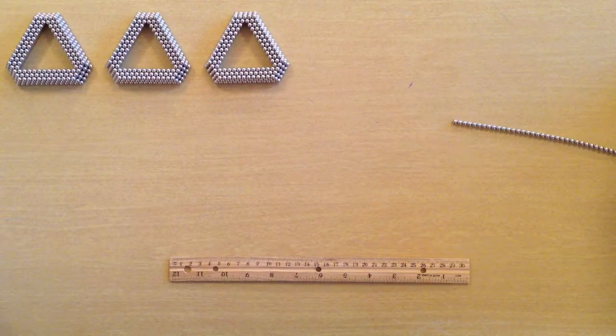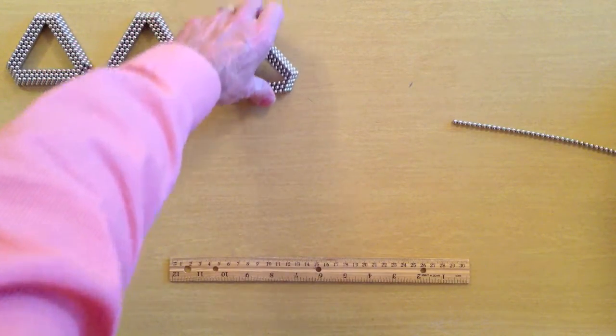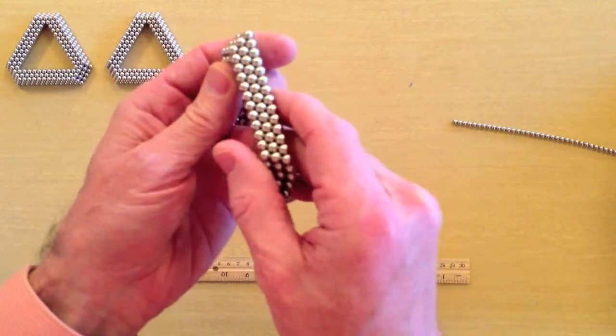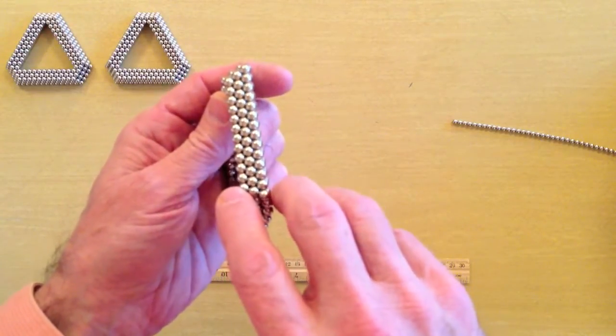The frame is built from four identical triangular subunits, each with three layers. Layer 1, Layer 2, and Layer 3.